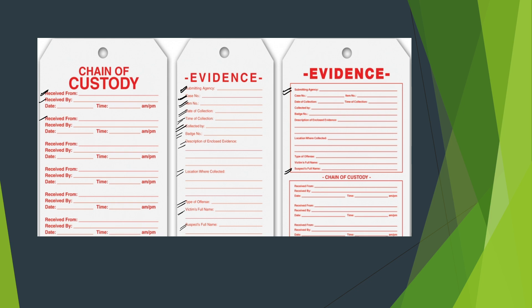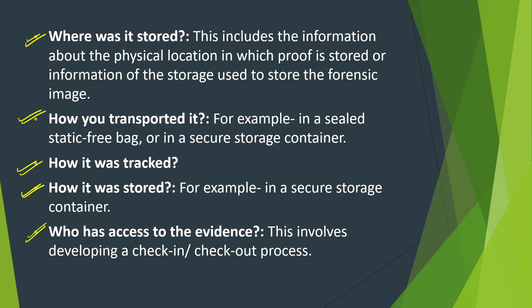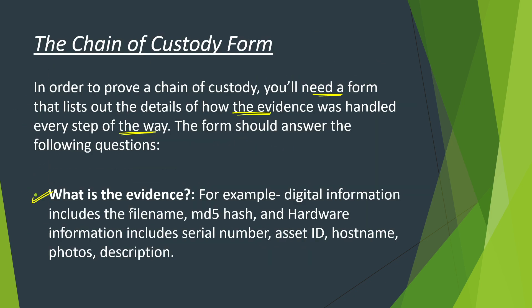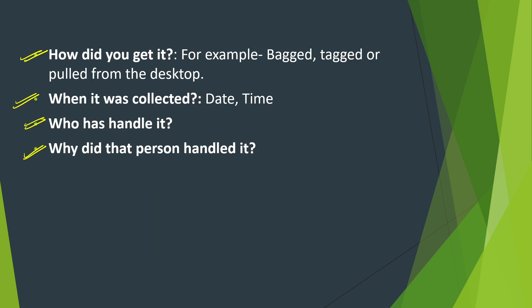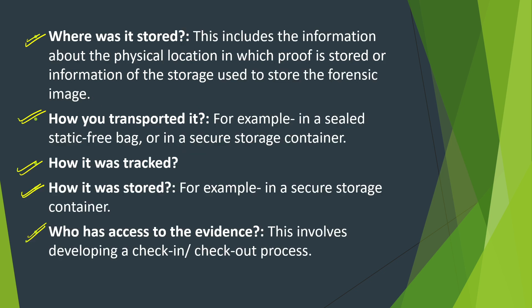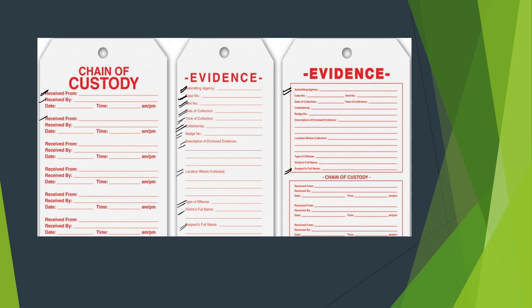To summarize, the chain of custody form must justify the following: what is the evidence, how did you get it, where was it collected, who handled it, why did the person handle it, where was it stored, how was it transported, how was it tracked, how was it stored, and who had access to it. All these things should be recorded and written down in the chain of custody form.